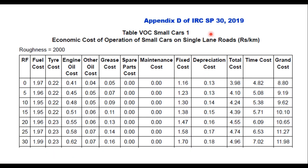Appendix D of IRC SP 30 2019 provides VOC data directly for different roughness values and rise and fall values for different types of vehicles. For a small car, there is a table where you can find fuel cost, tire cost, engine oil cost, other oil cost, grease, spare parts, maintenance cost, fixed cost, depreciation cost, and time cost. Fixed cost, depreciation cost, and time cost are time-dependent costs, while the others are distance-dependent costs.